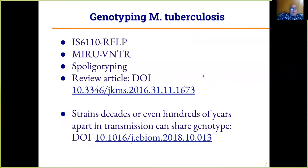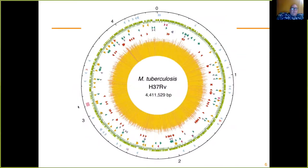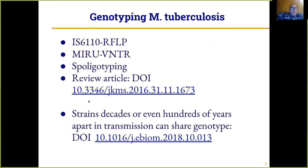How can we genotype Mycobacterium tuberculosis? One way is to use the insertion sequence IS6110, which is characteristic of M. tuberculosis, and apply restriction fragment length polymorphism to essentially count how many of these insertion sequences are present in a sample. There is also a variable number of tandem repeats method called MIRU, and often these two methods are used in tandem to genotype a sample.